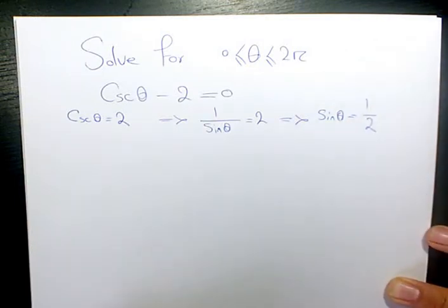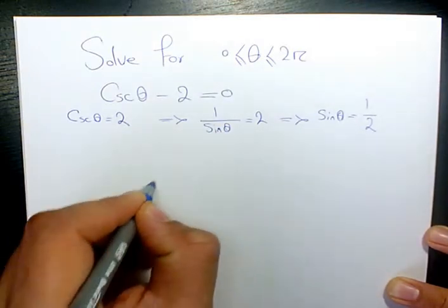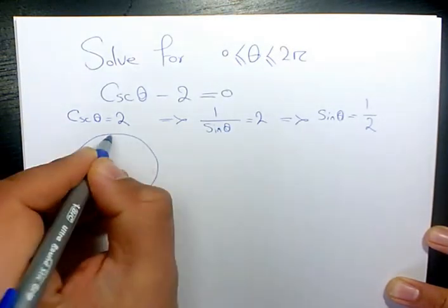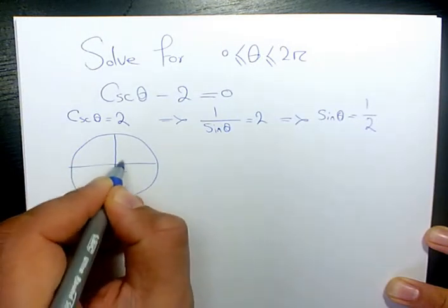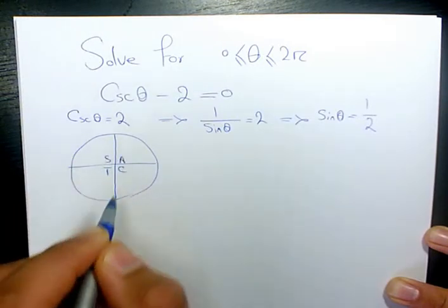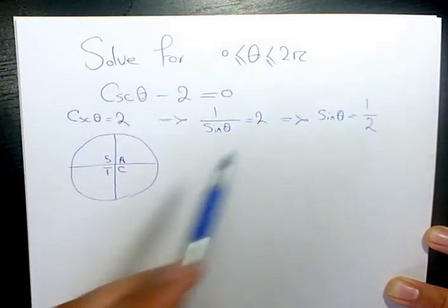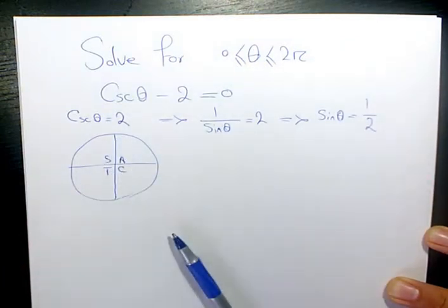Now I need to solve this one: sine theta equals 1 over 2. We had it before. We need to use the CAST rule, C-A-S-T. Sine is positive in quadrants 1 and quadrants 2.